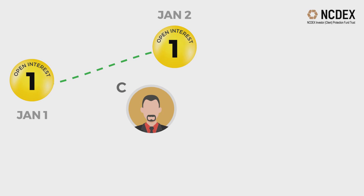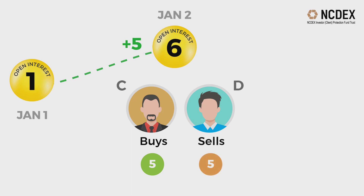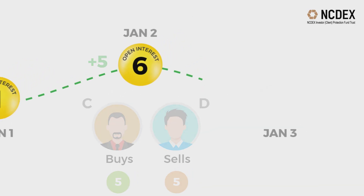On January 2nd, new participant C buys 5 contracts and new participant D sells 5 contracts. OI goes up from 1 to 6, up 5.